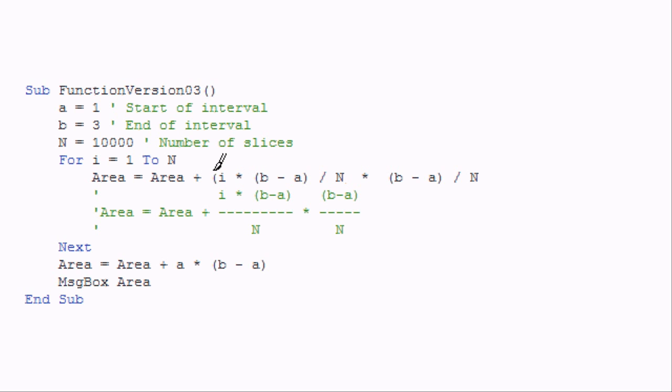Okay, now we can do some simplifying because we have B minus A in there twice. And we have divide by N in there twice.